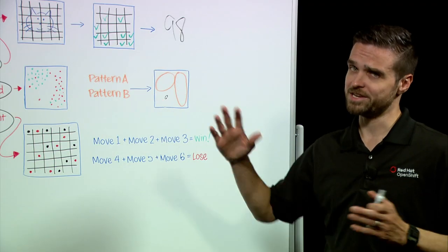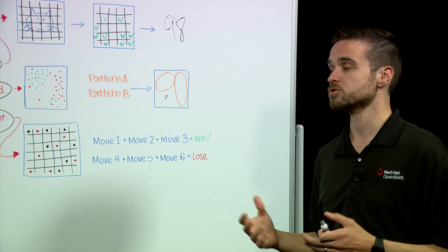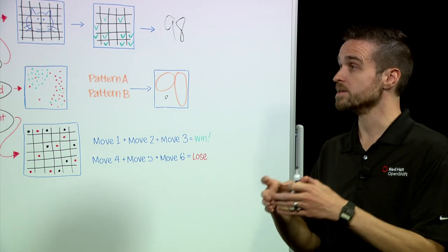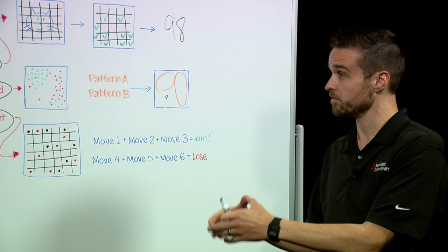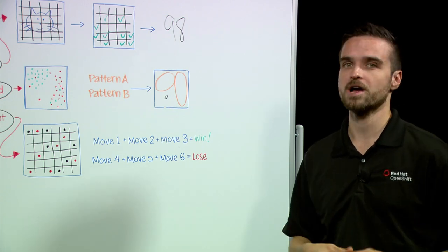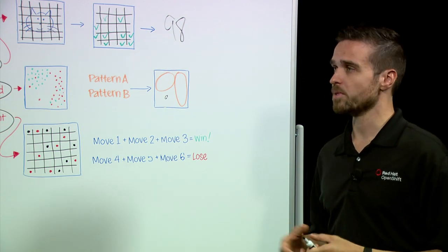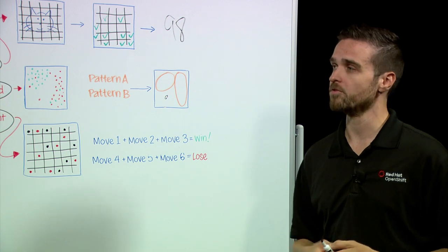Yeah. So in the machine learning space in general, containers have been really instrumental in allowing us to recreate specific data science environments and then run them not only for our training, but also for our production algorithms. This is where Kubernetes platforms like Red Hat OpenShift have become very important.